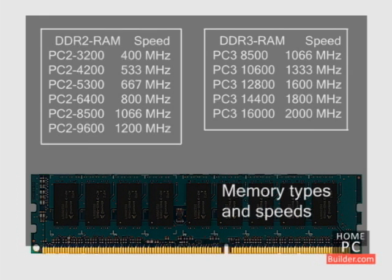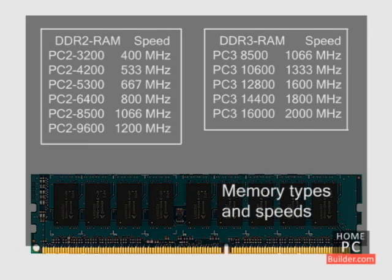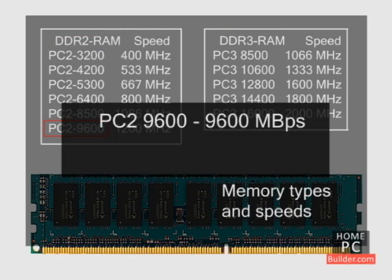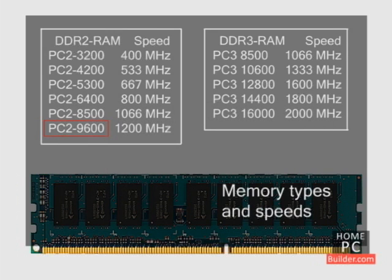Here's a breakdown of RAM types, their common names, and the speeds they run at. With both DDR2 and DDR3, the name refers to the bandwidth the memory has, so PC2-9600 can move 9600 megabytes of data per second.